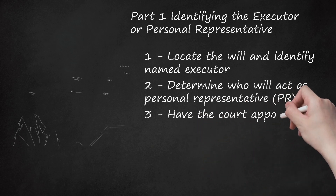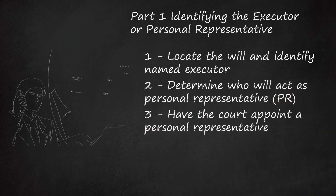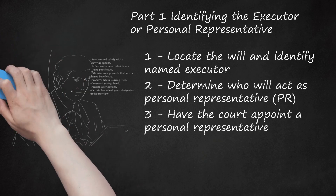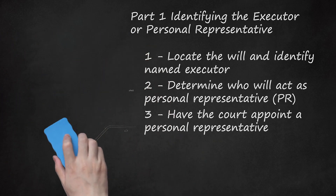Step 3: Have the court appoint a personal representative. The county probate court where the decedent lived can appoint a personal representative if the family is unable to decide who should act as PR or multiple parties want to act as PR. Contact the local probate court clerk and ask what steps you need to take. Courts will typically look at the following people: surviving spouse, children, parents of the decedent, the decedent's siblings, or the decedent's grandchildren. Courts have final authority to name and approve a personal representative and issue letters of administration, which grants legal authority to control the decedent's assets.